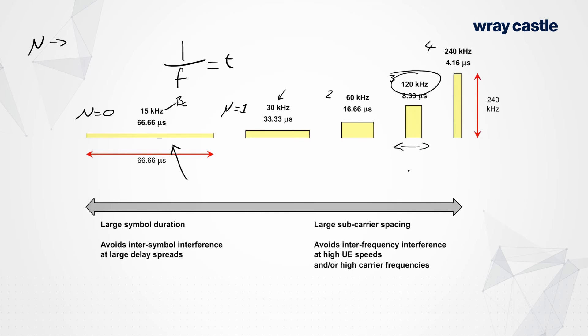Now the other thing as well that I hope you notice is that if the symbol time is reducing, does that mean that the symbol rate is increasing? Well, it kind of does because in a 1ms TTI, what we're able to do with a 15kHz subcarrier spacing and a 66 microsecond symbol, we're able to transmit up to 14 symbols of information in 1ms.